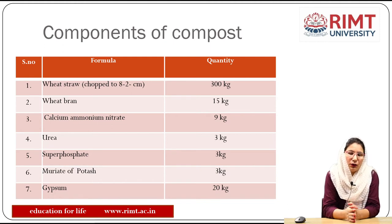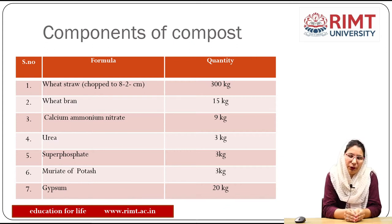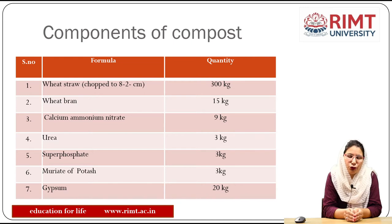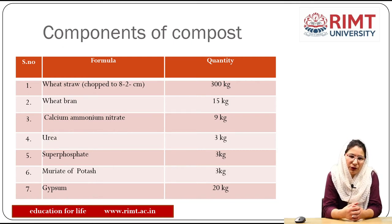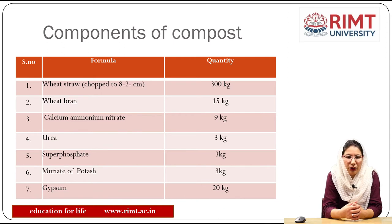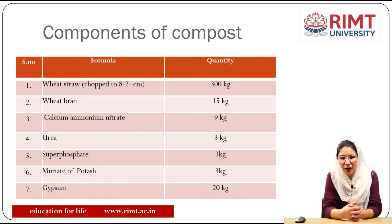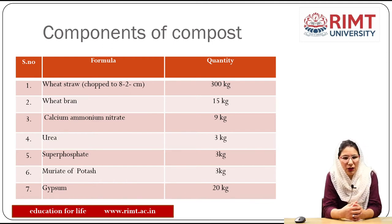Mushroom grows on a specific substrate. Other vegetable crops grow on soil and take nutrients from the soil, but in the case of mushroom, we need compost that provides nutrients to the mushroom. That compost consists of various components: wheat straw 300 kg, wheat bran 15 kg, calcium ammonium nitrate (CAN) 9 kg, urea 3 kg, superphosphate 3 kg, muriate of potash (MOP) 3 kg, and gypsum 20 kg.